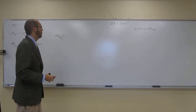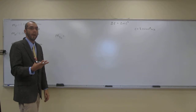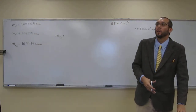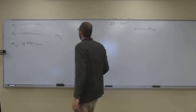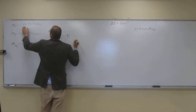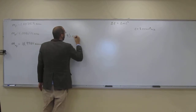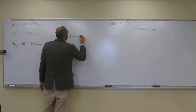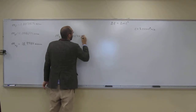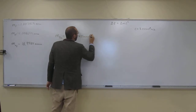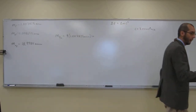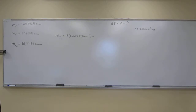So if we have fluorine-19, every fluorine atom has nine protons. So we say nine times the mass of a proton: 1.007825 AMU. Plus, fluorine-19 has ten neutrons.